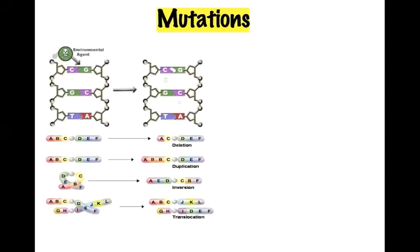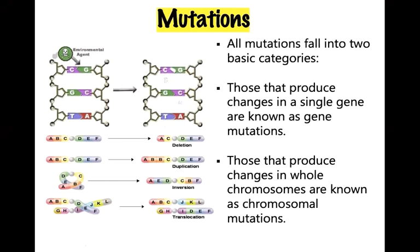This morning we'll be talking about mutation and chromosomal aberrations. We have two basic categories of mutation: those that produce changes in a single gene, known as gene mutations, and those that produce changes in whole chromosomes, known as chromosomal mutations. Mutation is generally defined as a change in gene structure or change in chromosomal structure.